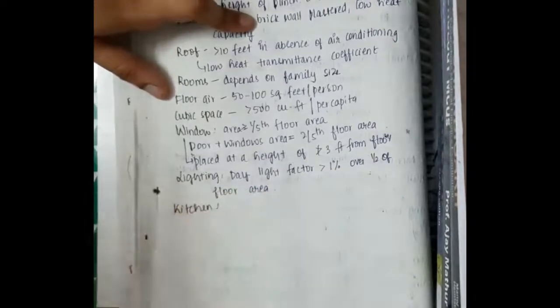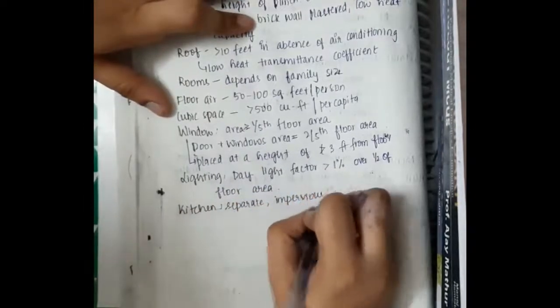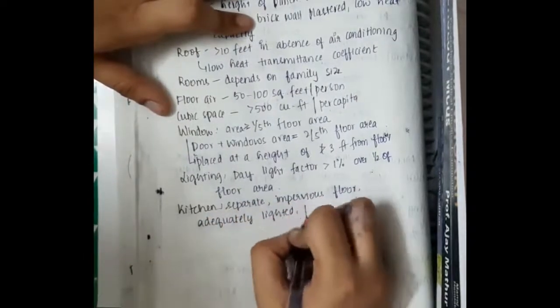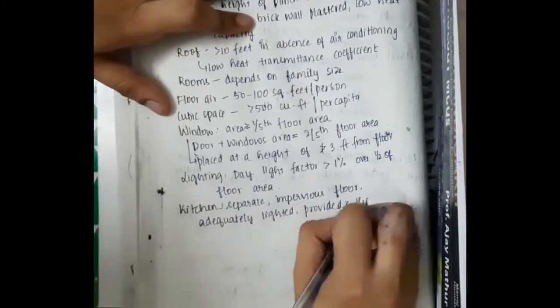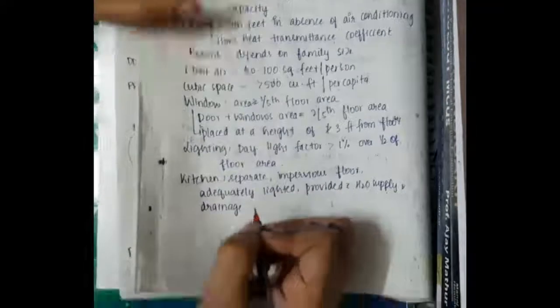Kitchen is separate impervious floor. Separate impervious floor adequately lighted. And it should be provided with good water supply and proper drainage should be present for the kitchen.